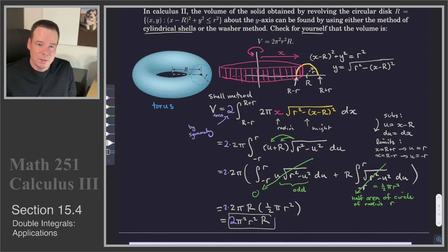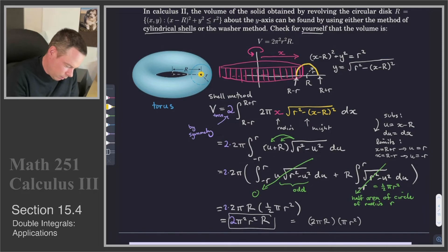The key takeaway from this is that this formula actually breaks down as 2πR times πr². And when I factor it in this way, those two things actually mean something. What is the first quantity, 2πR? If I imagine the center of that circle traveling around when it gets rotated, the distance it travels is 2πR.